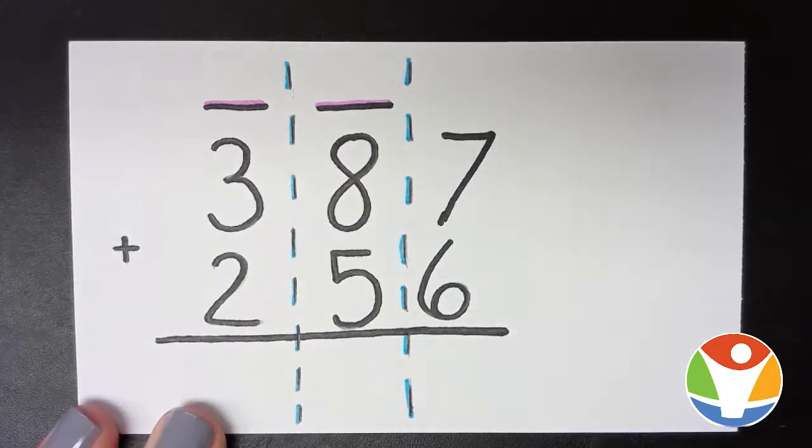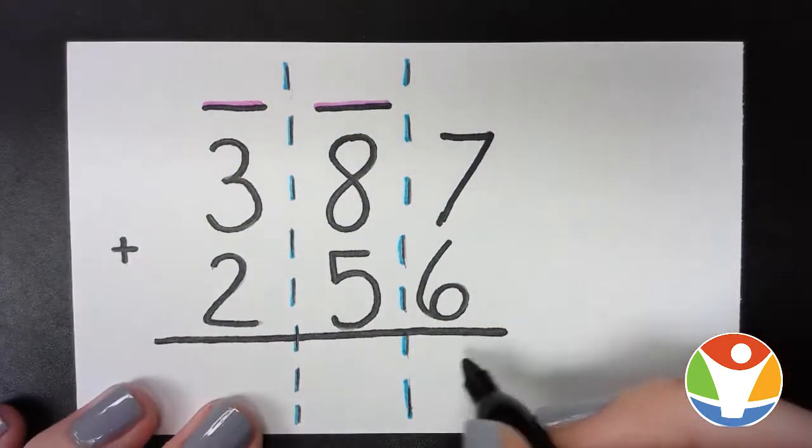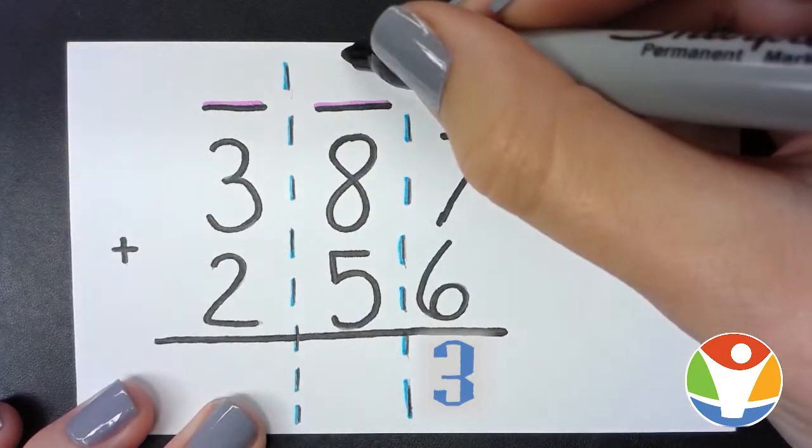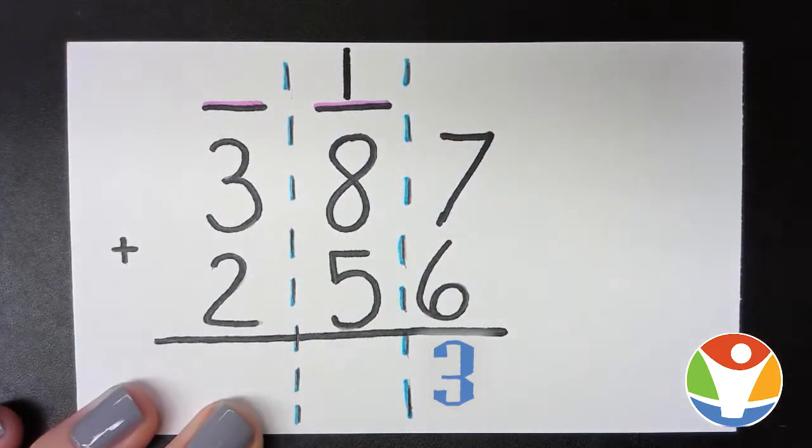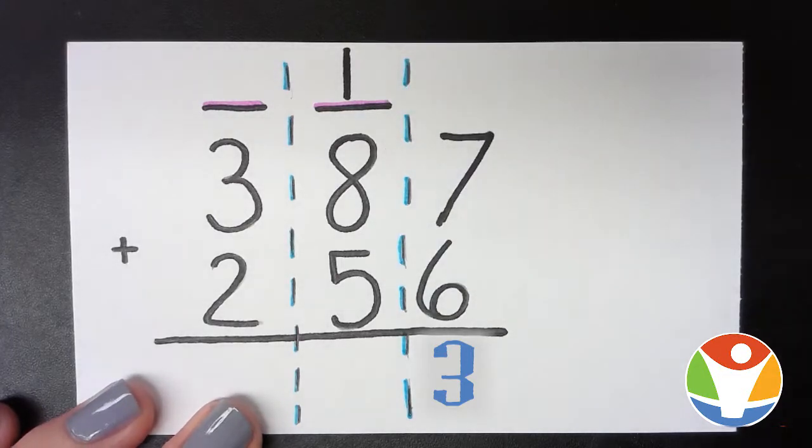So seven plus six will give us 13, so we put our three and then we take our one next door. Now we're going to do one plus eight plus five, which will give us 14.